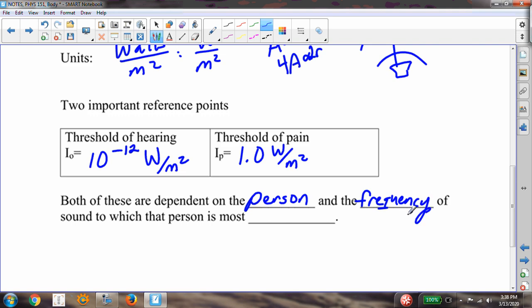If you don't believe me, go do your frequency generator that I showed you earlier. And put in a sound of 400 hertz. And then put in a sound of a couple thousand hertz. And you'll see a much greater difference in your tolerance for that sound. And the higher frequency tends to cause pain much more quickly. So it's dependent on the person and the frequency of sound to which that person is most sensitive.